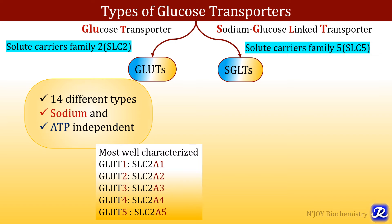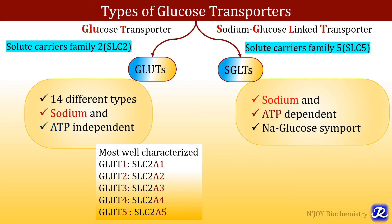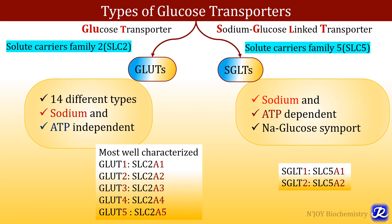For sodium glucose linked transporters: S stands for sodium, G for glucose, L for linked, and T for transporters. They belong to solute carrier family 5, SLC5. These transporters are sodium and ATP dependent — they require sodium and ATP. There are mainly two types: SGLT1, whose gene is named SLC5A1, and SGLT2, whose gene is named SLC5A2.